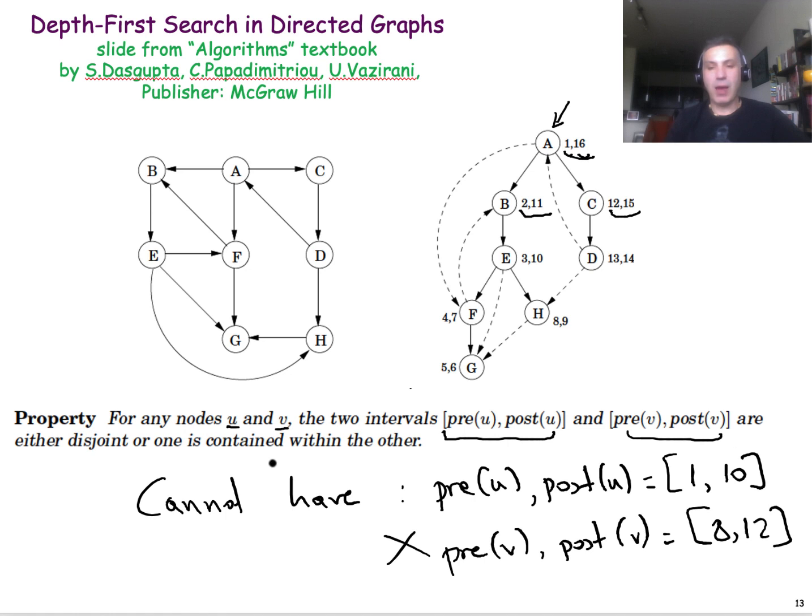Now, why is this true? Essentially, these timestamps represent the time period that the node was in the stack. Node A was in the stack from time 1 to time 16. And because the stack works in a last-in, first-out mode, we cannot have that a node is in the stack for a time period that partially overlaps with the time period that a predecessor of that node was in the stack.